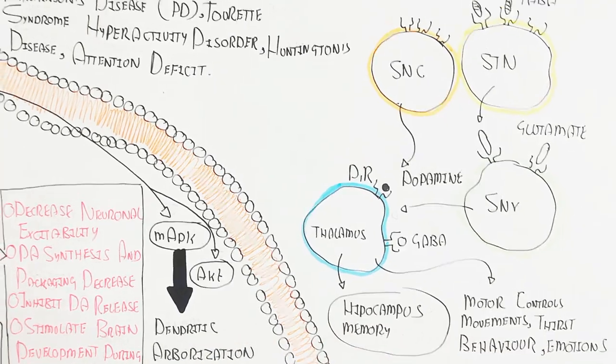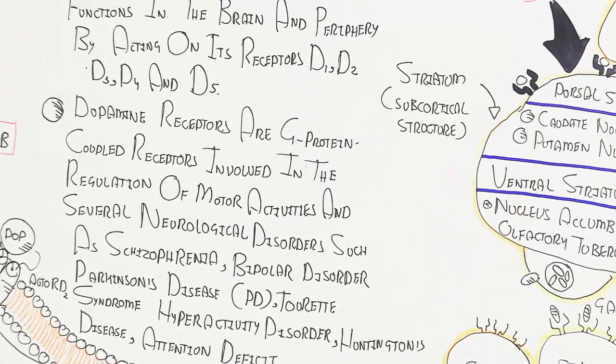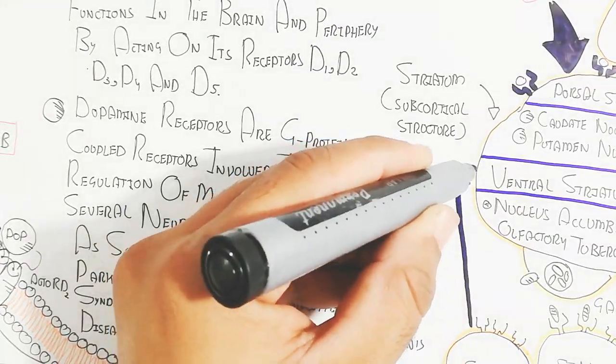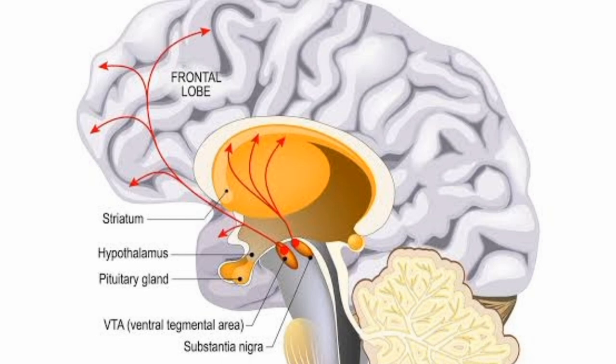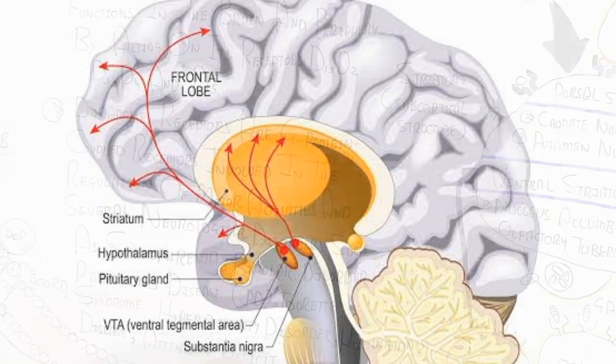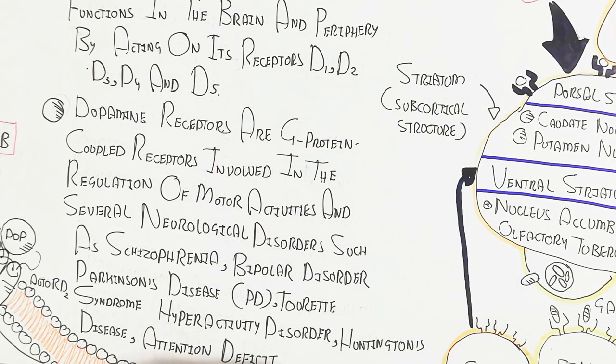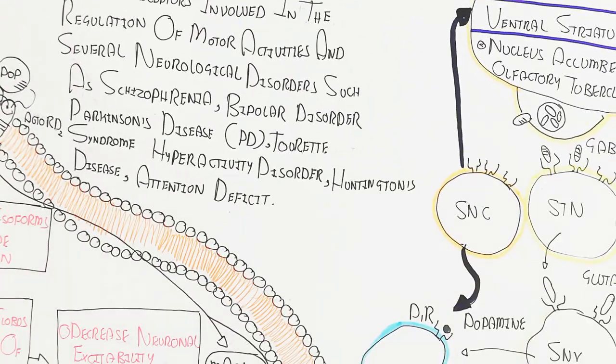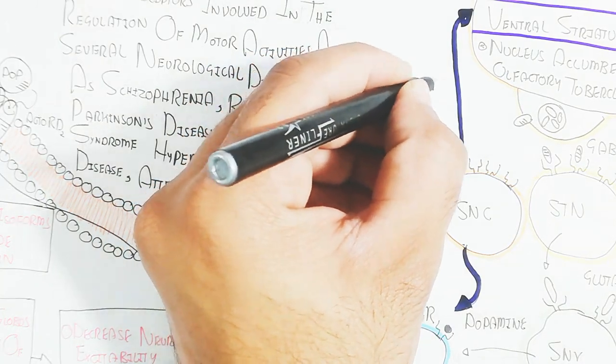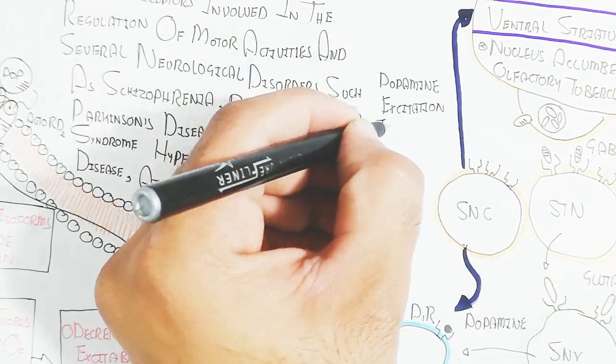Remember, substantia nigra compacta is used for the production of dopamine. This substantia nigra will produce dopamine targeting the striatum. When the striatum targets the substantia nigra compacta, it will produce dopamine excitation to brain and striatum, targeting the thalamus.